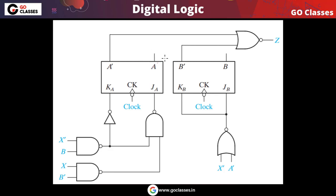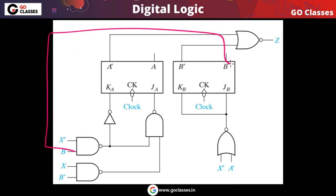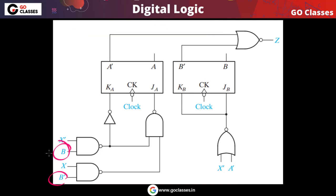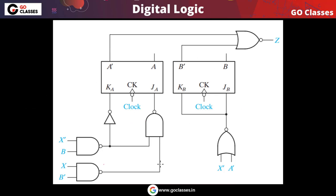Output A is connected here, and A' (A dash) is connected here. Output B is connected here and B' (B dash) is connected here. So we have B, B dash, and A dash as signals, and there is also an external input X present.